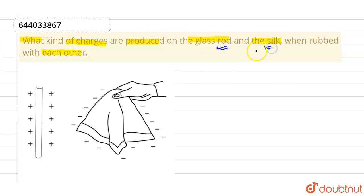So we know that when glass rod is rubbed with silk, there will be transfer of electrons. And after that, the glass rod acquires positive charge.